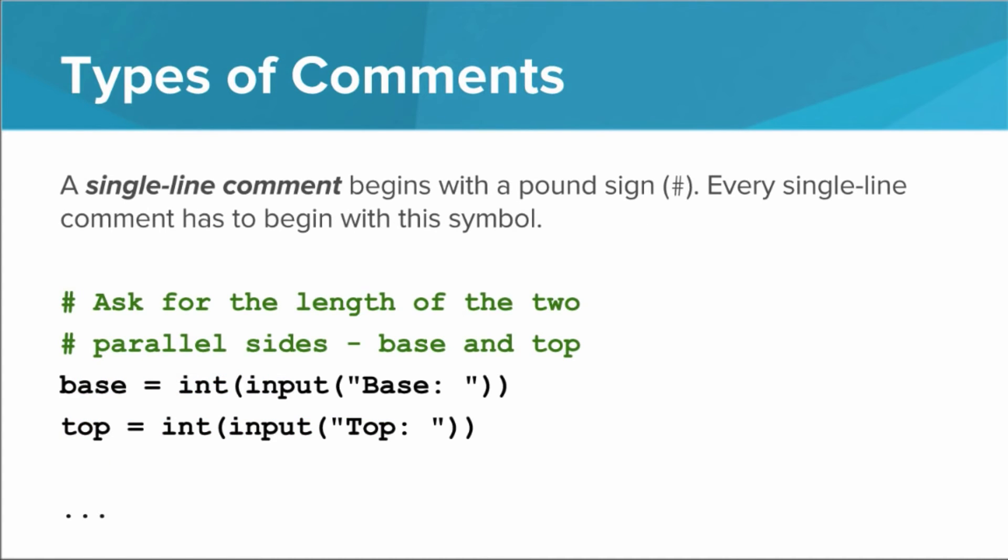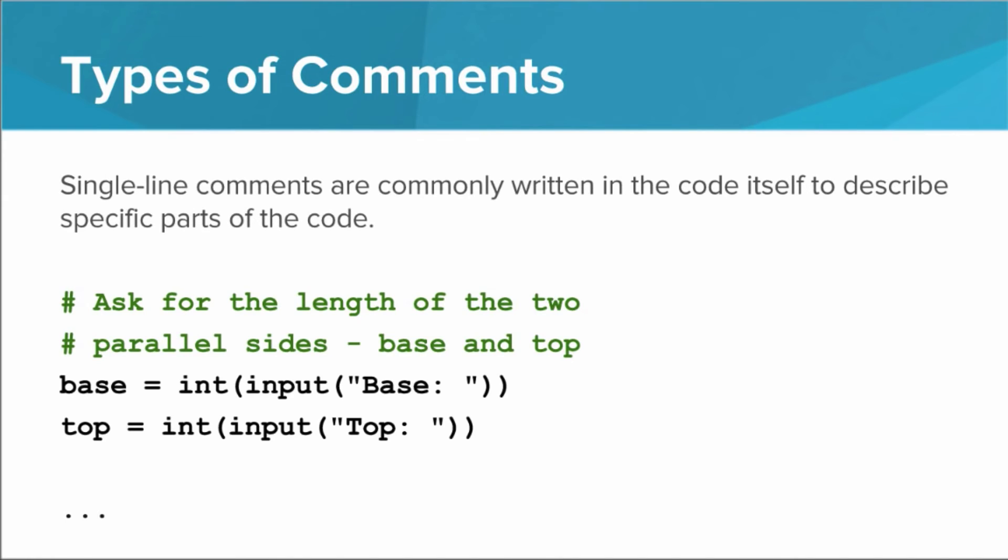Then, you have the single-line comment, which begins with a pound sign. When the interpreter sees a pound sign anywhere except in quotation marks, it assumes that it can ignore the rest of the line. Single-line comments are commonly written in the code itself to describe specific parts of the code.